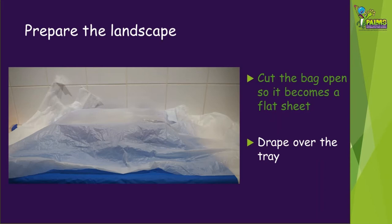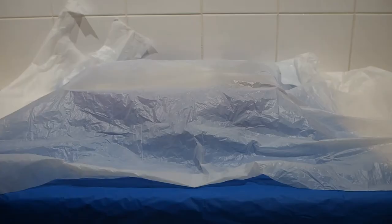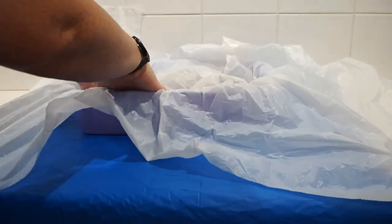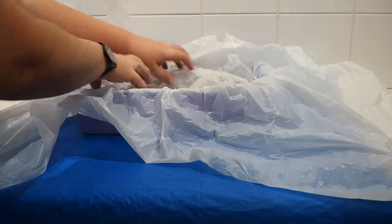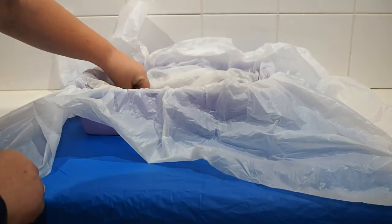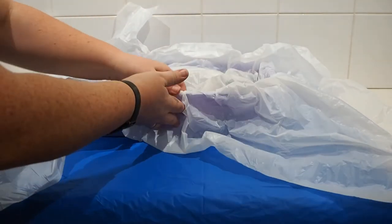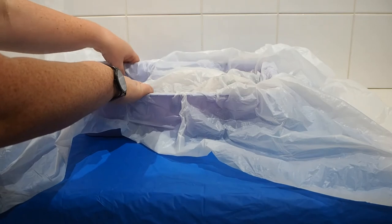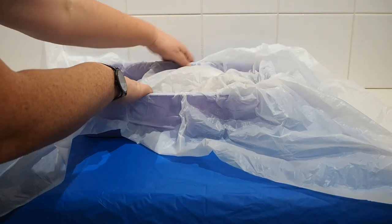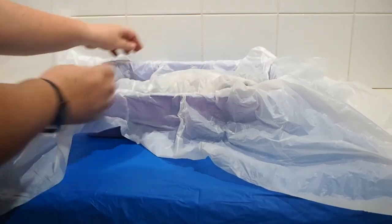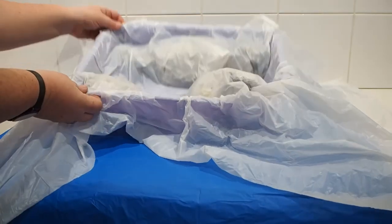The blue tack is going to be used to keep the plastic in place once you drape it over the top. If you're using a garbage bag, cut the bag open so it becomes a flat sheet, then drape it over the tray. Push the plastic sheet down into the tray, securing it to the bottom with the blue tack you've already put there. Allow the plastic to smoothly drape over your newspaper shapes — not letting it be too baggy. Secure the plastic to the edges of the tray using the blue tack around the edges.